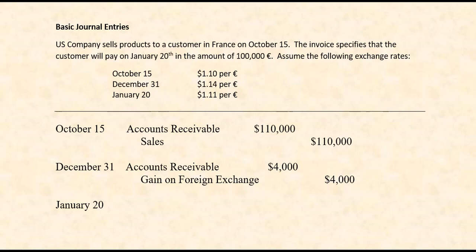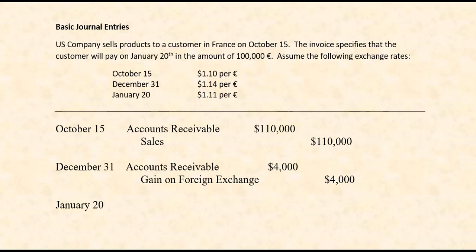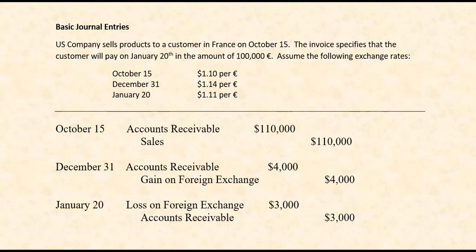So now we've reached January 20th, the day our customer is supposed to pay us the 100,000 euros. We need to update our receivable to what those euros would be worth. Are they still worth $114,000 like we thought on December 31st? No. Using the exchange rate for January 20th, each euro is now only worth $1.11. Multiply that times 100,000 — it tells you that the receivable, instead of $114,000, should now be $111,000. So we need to bring the receivable down from $114,000 to $111,000 — that's a difference of $3,000. This will be a $3,000 loss on foreign exchange. After all these adjustments, the receivable started at $110,000, went up by $4,000, down by $3,000 — the receivable is now $111,000, and that's what we're going to receive from our customer.